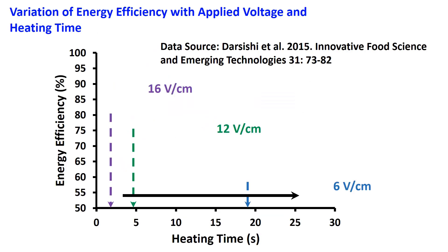High energy efficiency can be achieved because 90% of the electrical energy could be converted into heat. Energy consumption of Ohmic heating was measured as 4.6 to 5.3 times lower than traditional heating. Energy efficiency depends on the applied voltage in volts per centimeter.